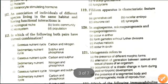Next question: filiform apparatus is a characteristic feature of generative cell, nucellus embryo, aleurone layer, or synergids. The answer is D — synergids.